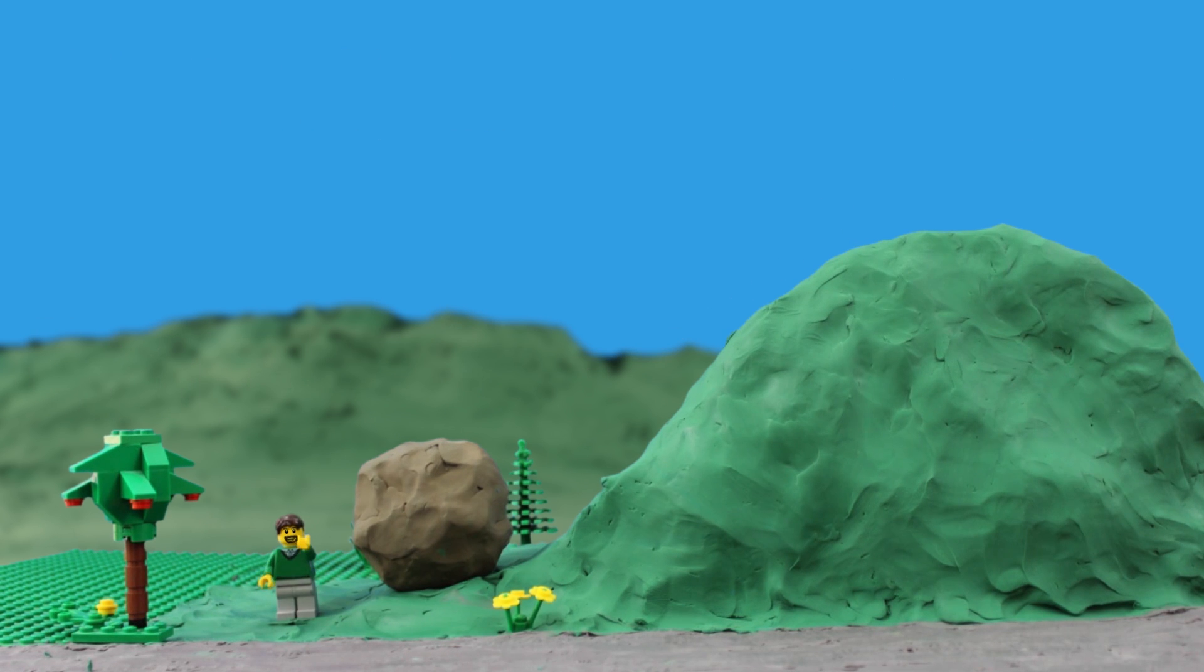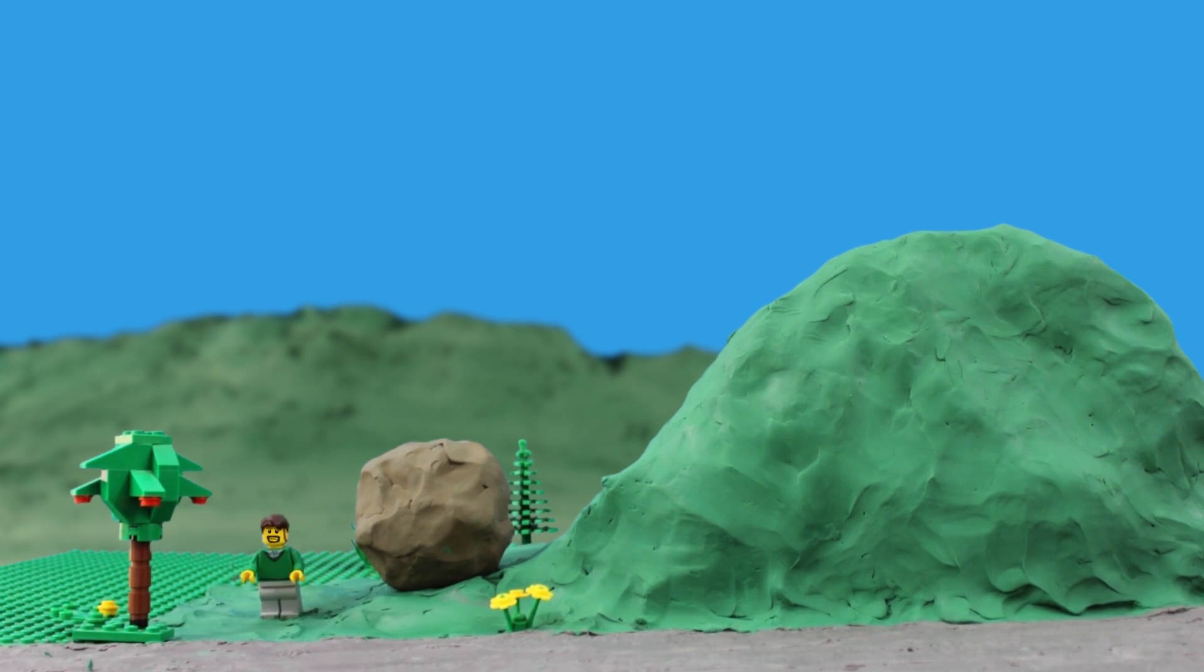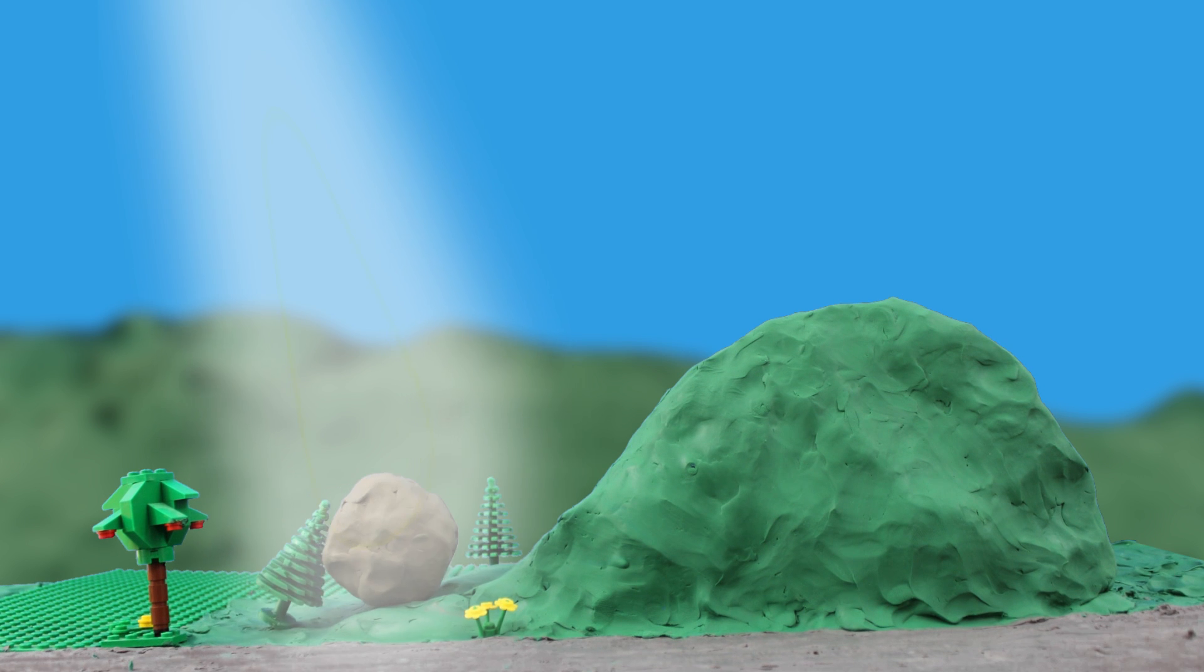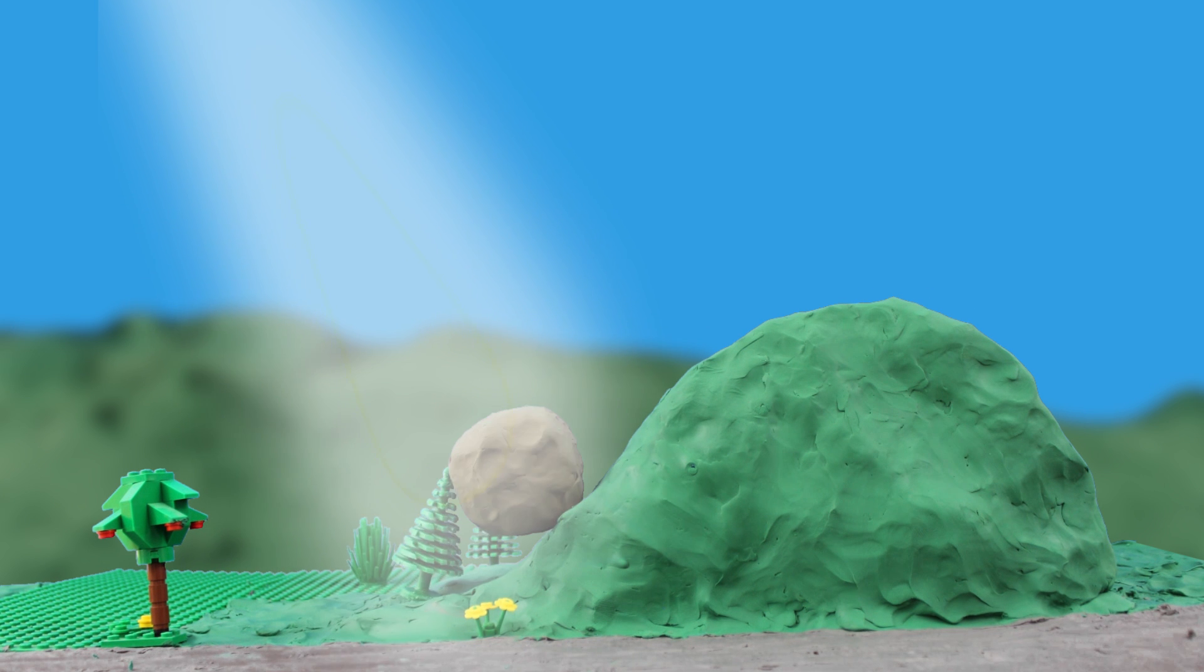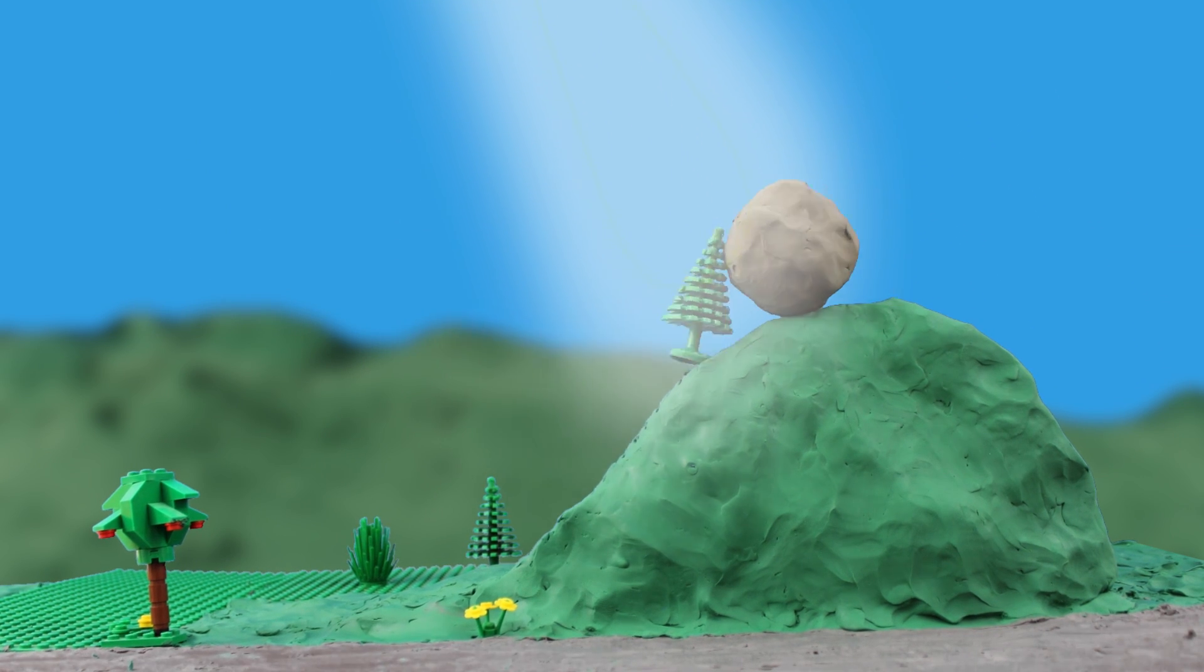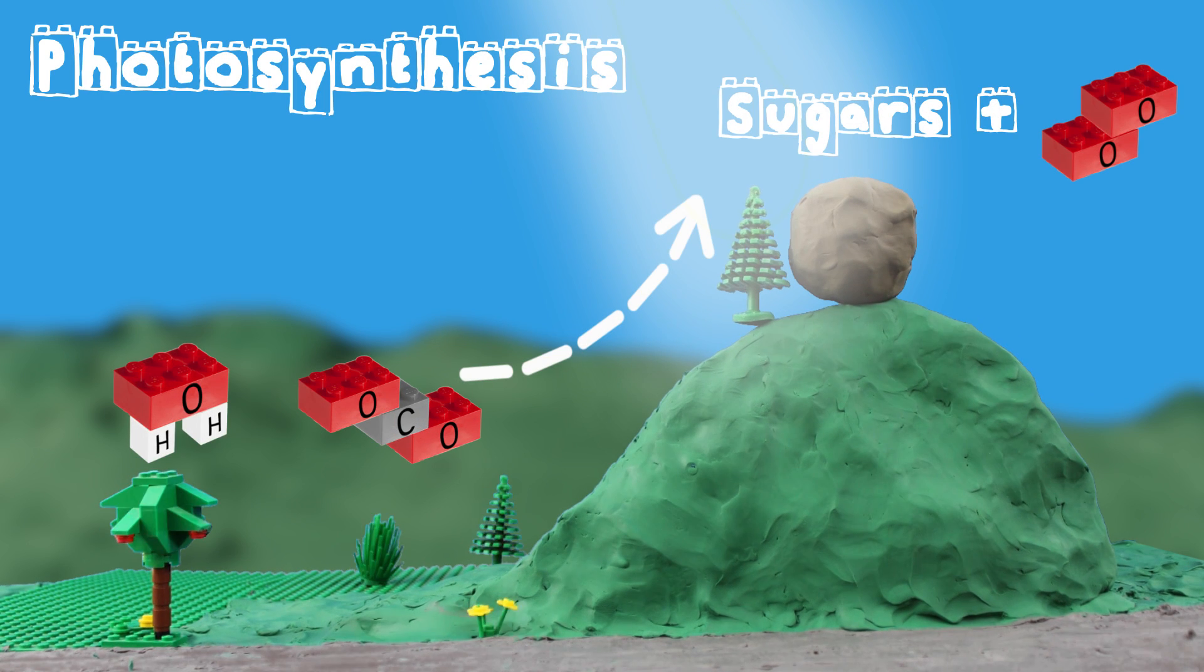It sounds simple, but right now the people of Bricktown can't do this. But plants have been doing this process all along and just didn't tell anyone. Plants can use the sun's energy to turn carbon dioxide and water into oxygen and sugar, i.e. fuel. This is called photosynthesis.